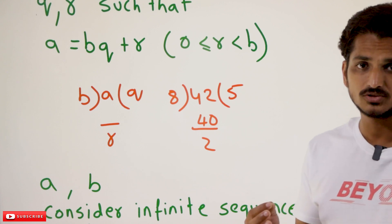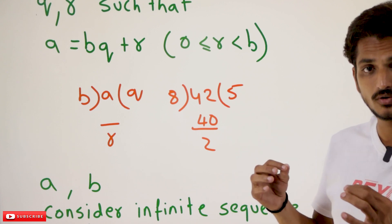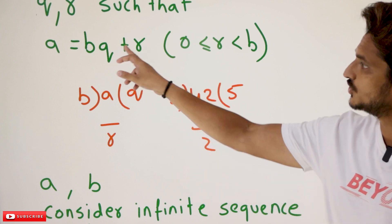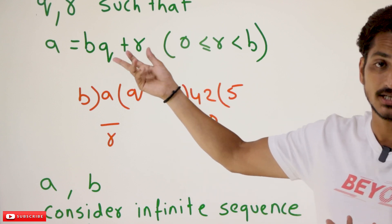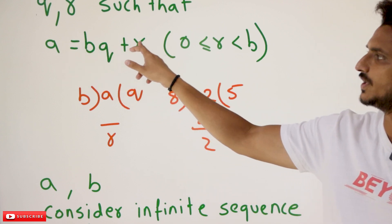The exact division is written like this. If you are having A, B, two values, you are having two unique integer values Q, R such that it satisfies this condition. A equals BQ plus R.